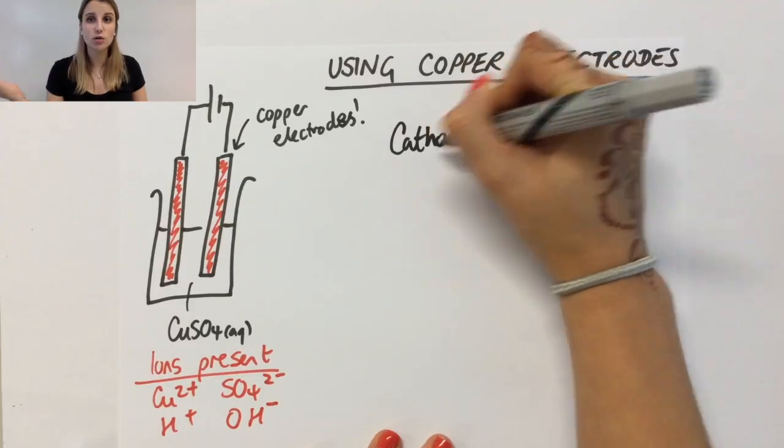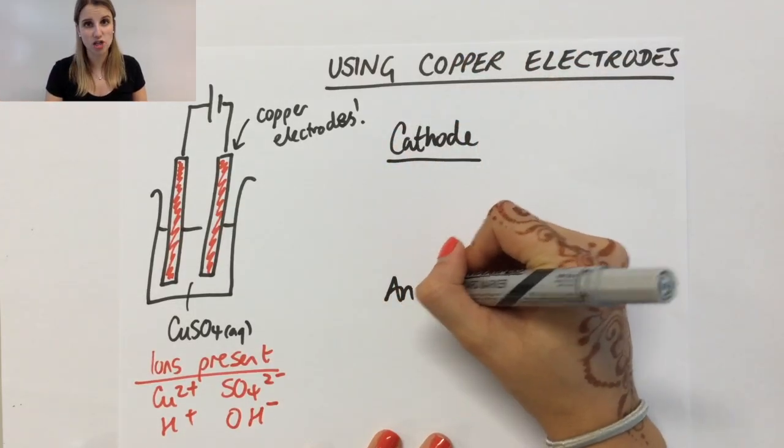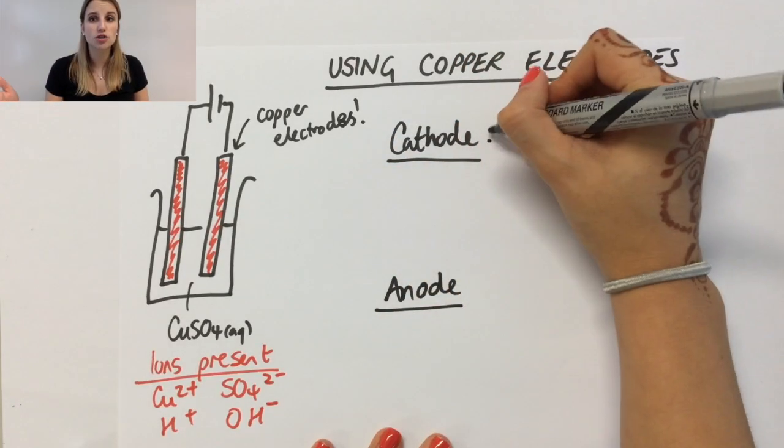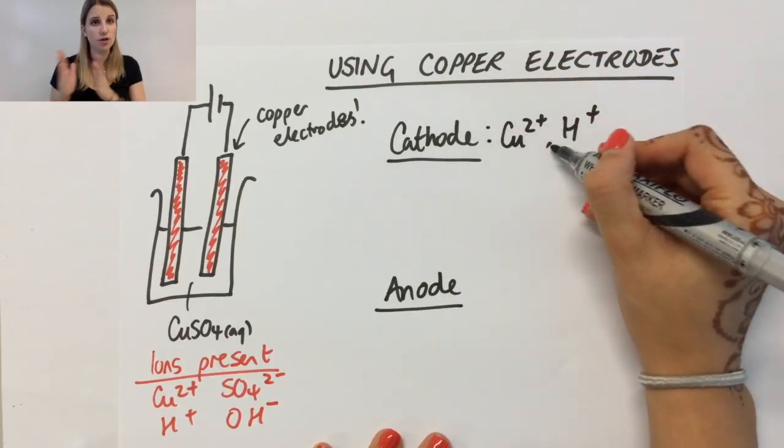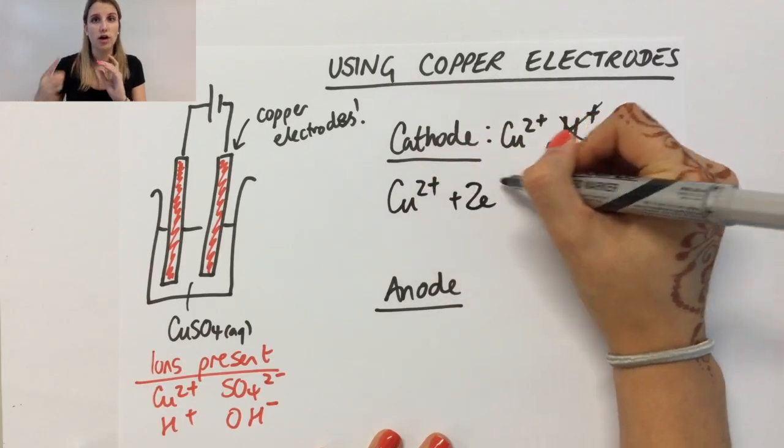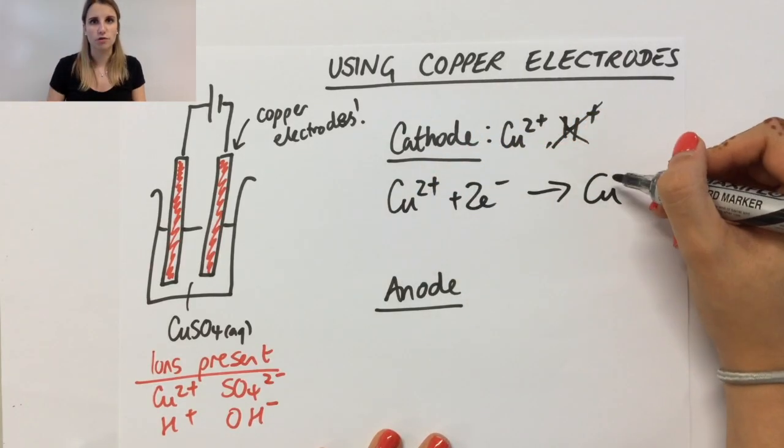At the cathode, I've still got the Cu2+ and the H+, and the Cu2+ still gets reduced to make copper, meaning that cathode is going to get bigger in size as the copper coats it with more and more layers.